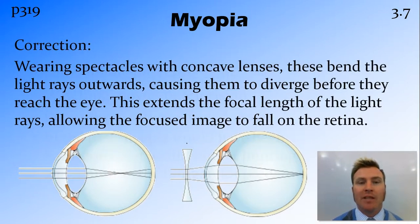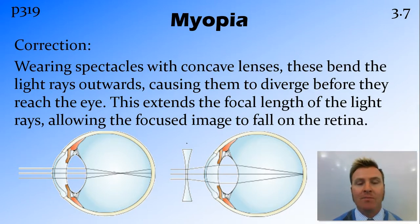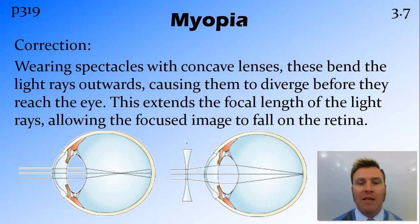The way we correct myopia is the opposite approach. We still use spectacles, but in this case a biconcave lens. This splits the light prior to reaching the eye, so that when refraction in the eye occurs, it focuses onto the retina rather than in front of it.